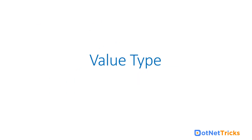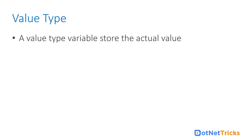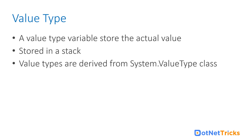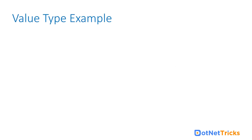Now let's discuss about the value type. A value type variable stores the actual value, and that value will be stored in a stack. Value types are derived from the System.ValueType class. So value type will always be stored in a stack. In memory, we have two things: we have a stack and we have the heap.